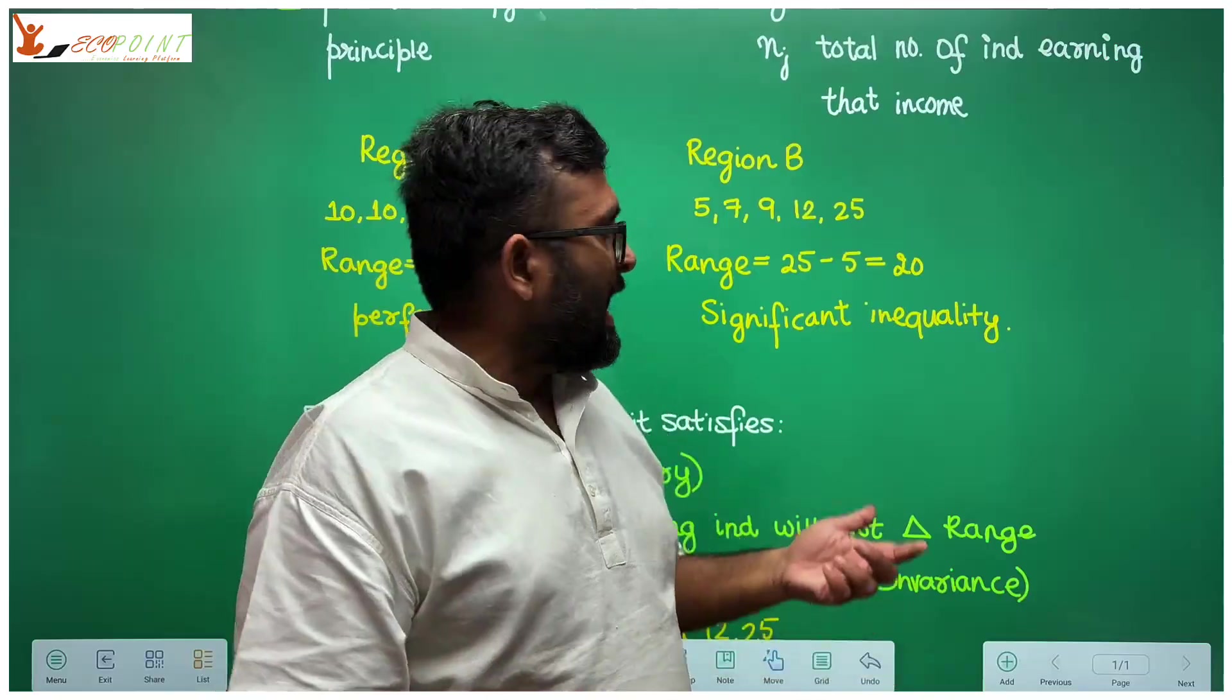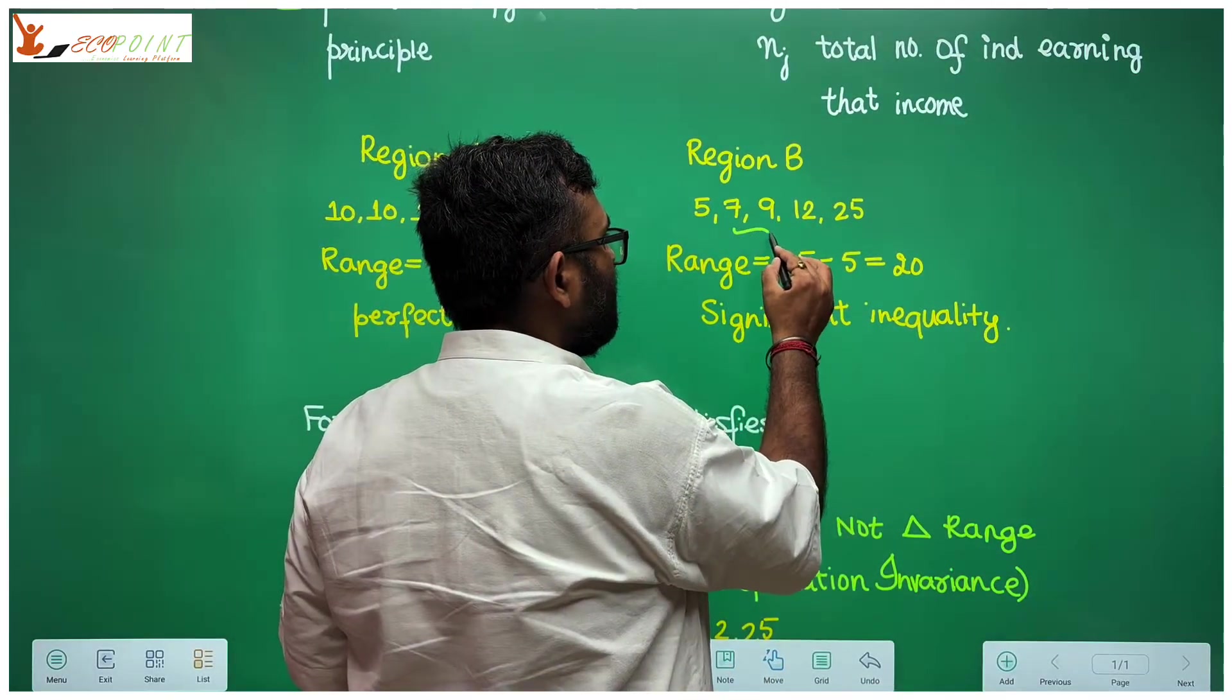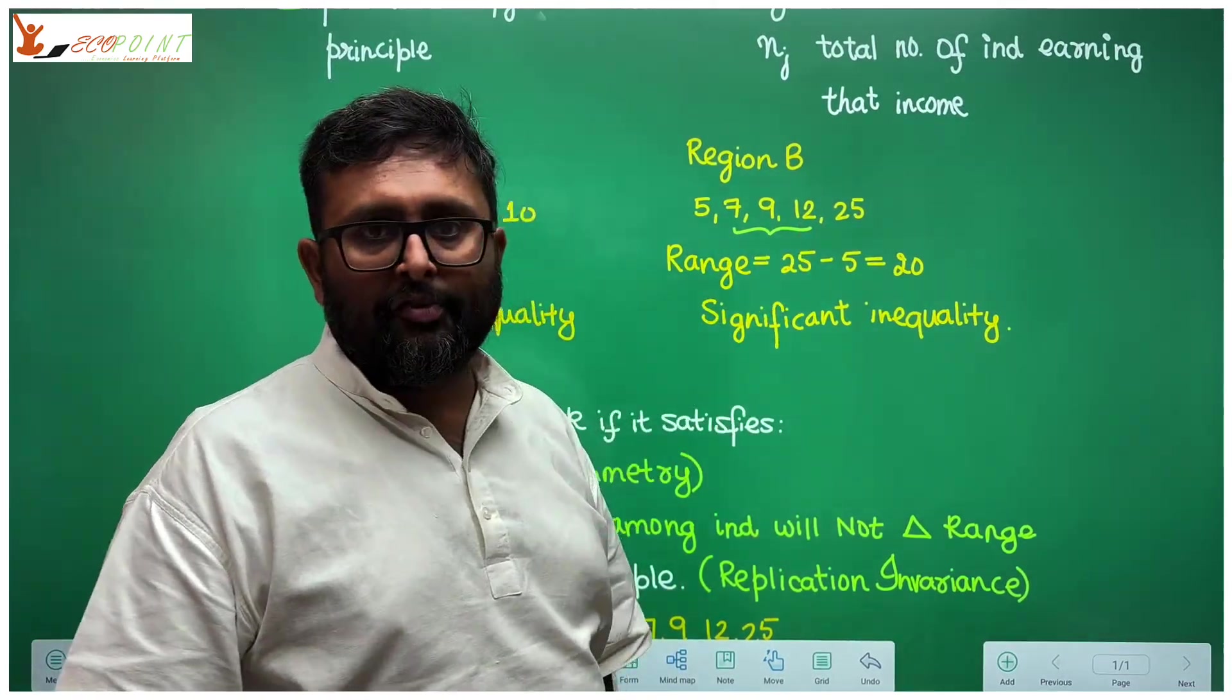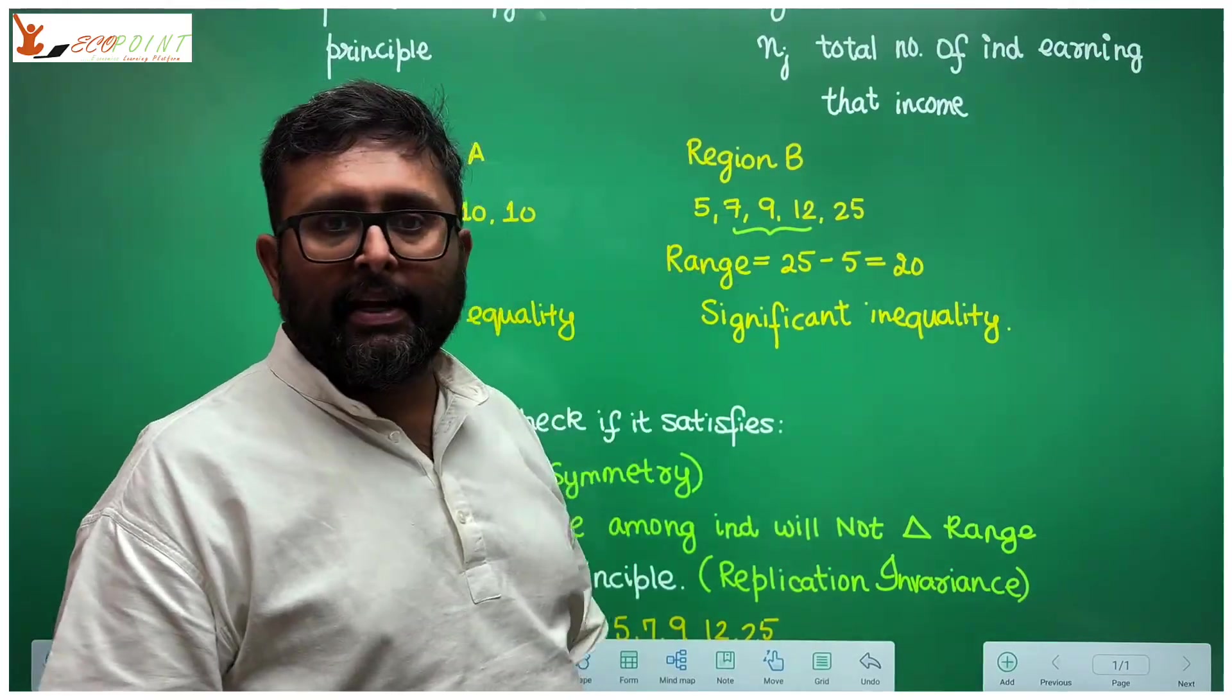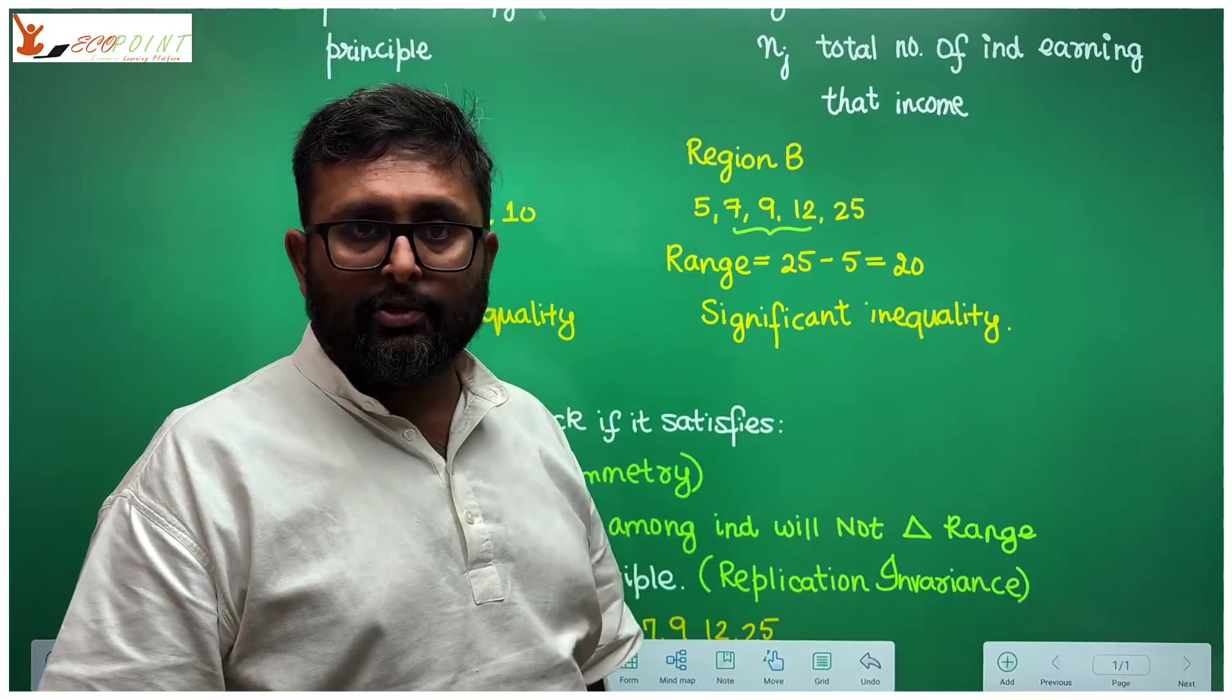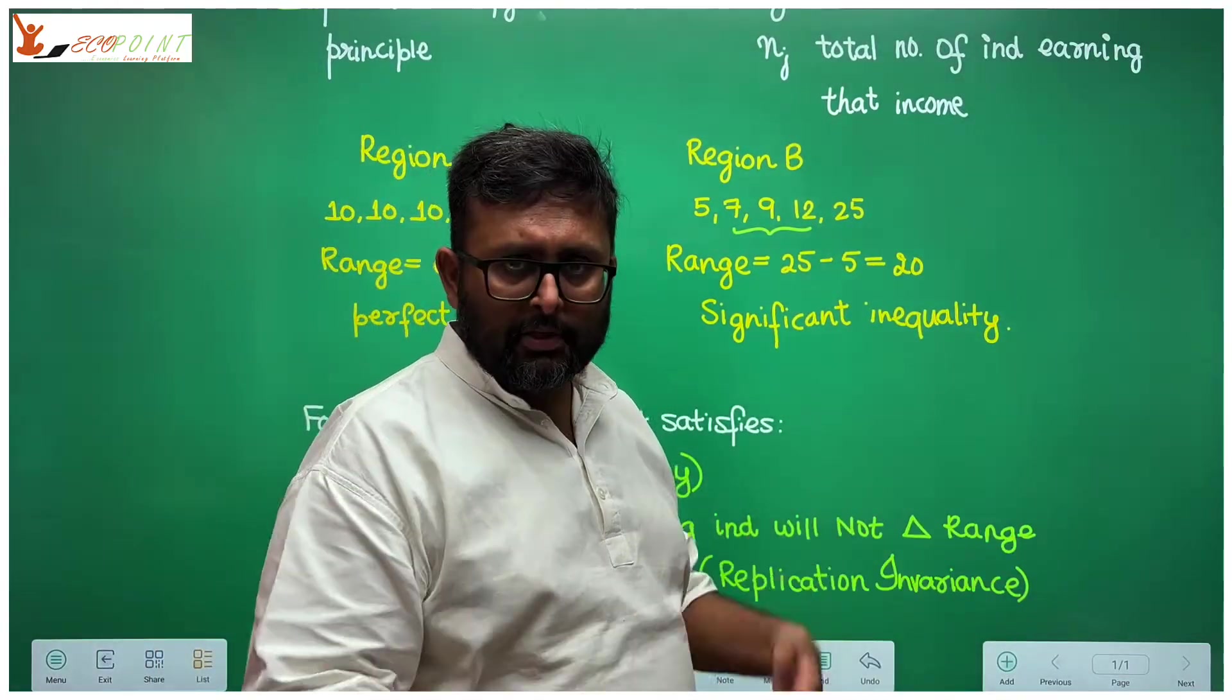Now you tell me, have you given any importance to the numbers which are there in between? No, you haven't. There could be any other numbers between 5 and 25. Range will remain same. This could have been 6, 8, 17. It doesn't change anything. Range is maximum minus minimum. It will remain same. So it is not paying any attention to the in between numbers.